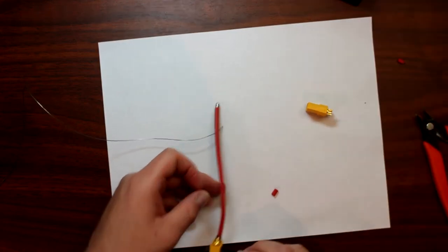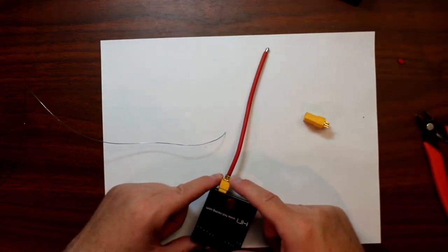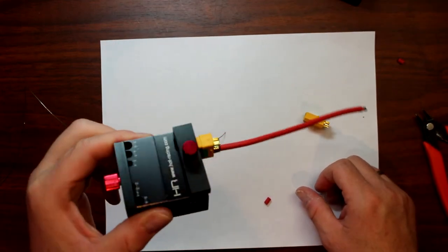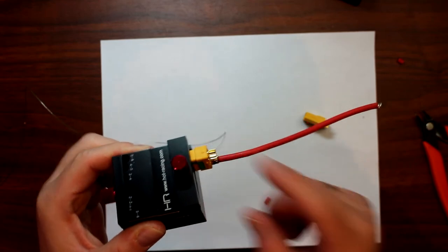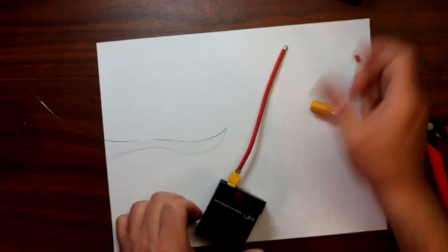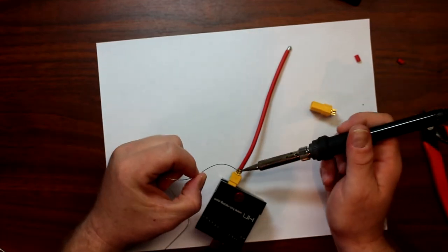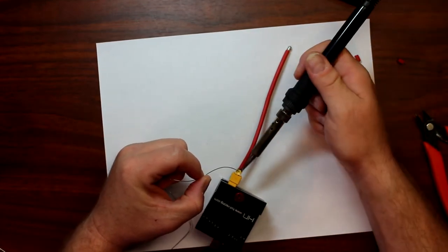Now what you want to do is tin your connector. If you guys can see it, there's nothing, it's perfectly the gold color. Now you're going to tin your connection. Again, you don't want to put on there too much or not enough.